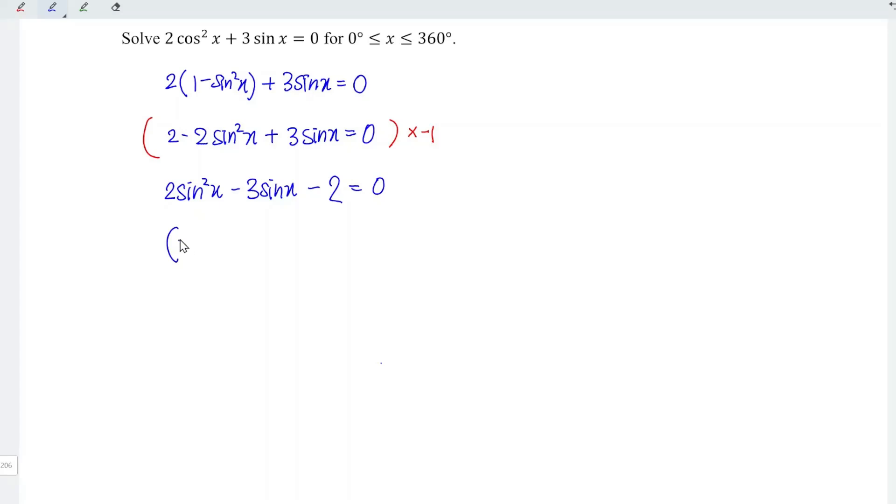Let's factorize. We should obtain 2 sine x plus 1 times sine x minus 2 is equal to 0.